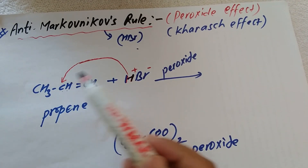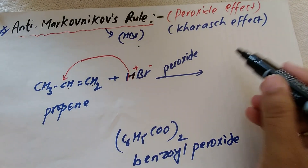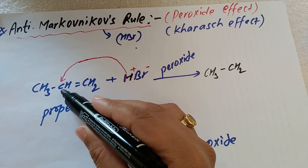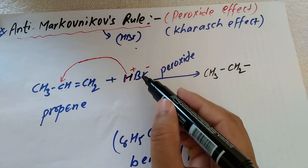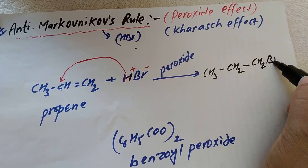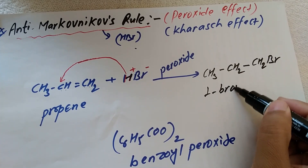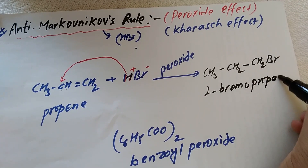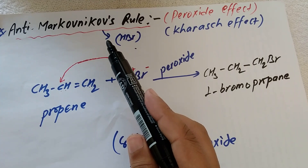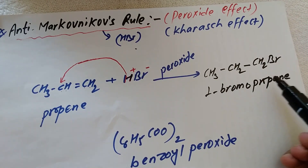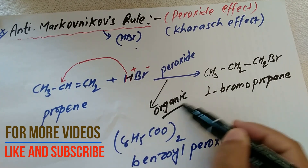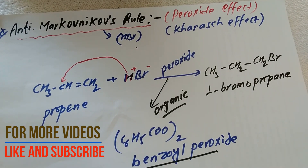So the product formed is CH3-CH2-CH2Br. One hydrogen is added to the CH= carbon, and Br is bonded to the CH2 end carbon. The product is 1-bromopropane. In anti-Markovnikov's rule, 1-bromopropane is formed, but in Markovnikov's rule, 2-bromopropane is formed.